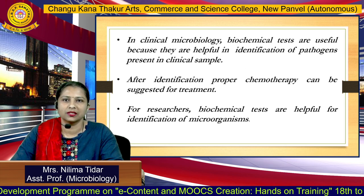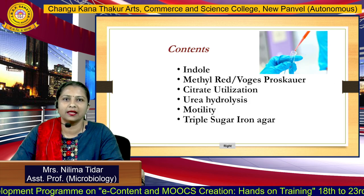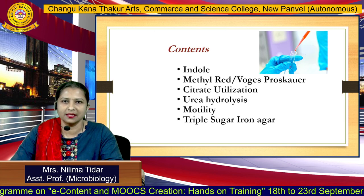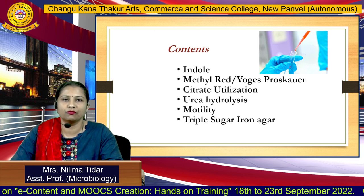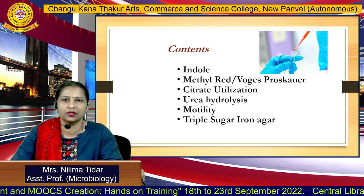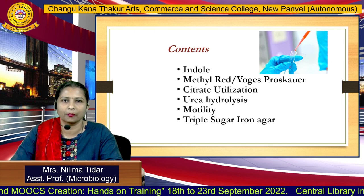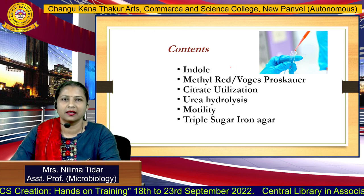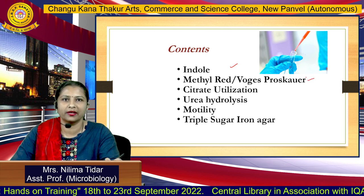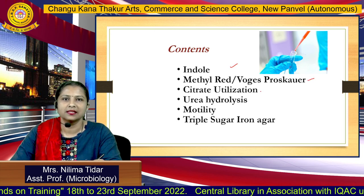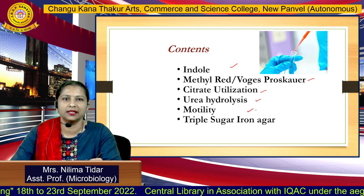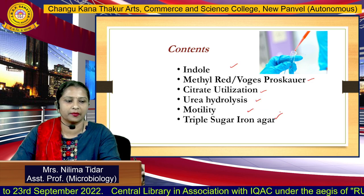Today in my presentation, I am going to enlist various different types of biochemical tests which have been useful for carrying out the identification of various pathogenic organisms. The various tests are: Indole test, Voges-Proskauer and Methyl Red test, Citrate Utilization, Urea test, Motility, and Triple Sugar Iron Agar.